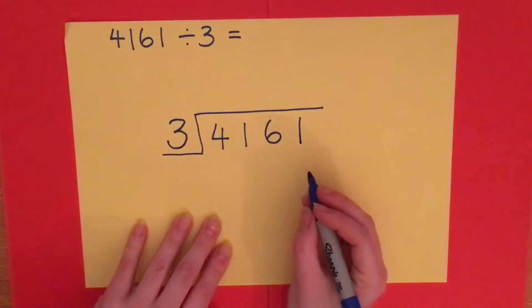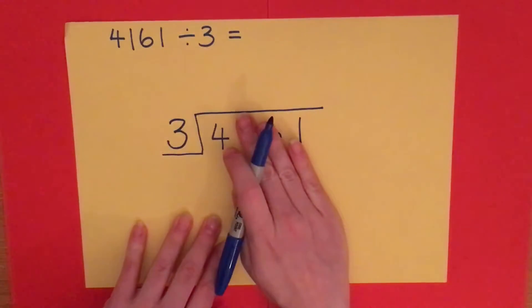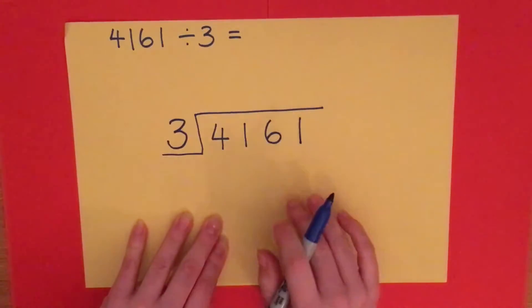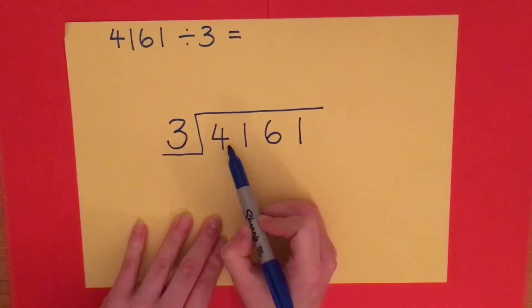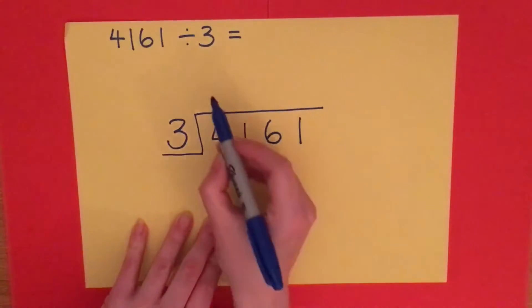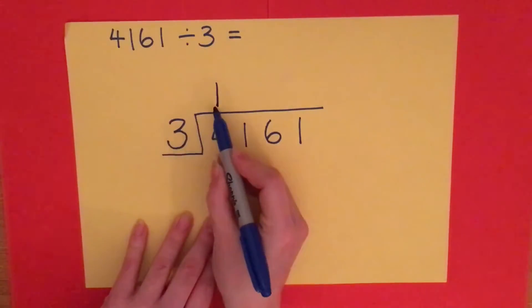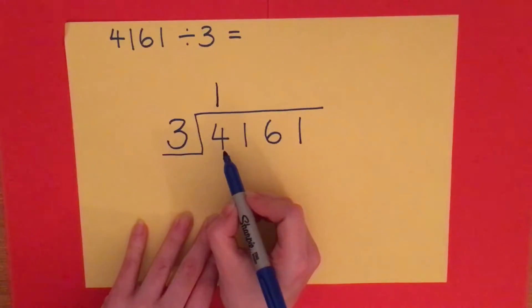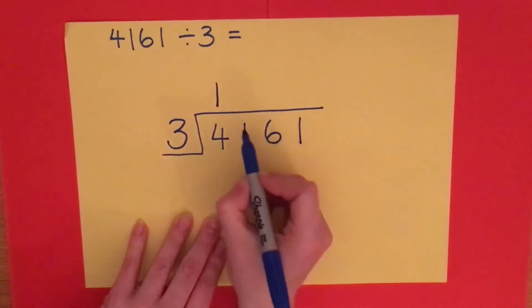Remember that the bus stop method allows us to segment this number and partition it. We're going to look at the four first. How many threes go into four? 1 times 3 is 3, 2 times 3 is 6. So 2 times 3 is too many. I can share three of them between one person. So 1 times 3 is 3, but I've got 1 left over and that 1 carries to the next digit.